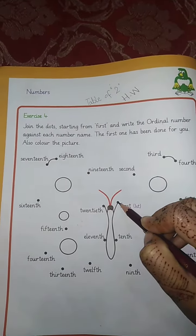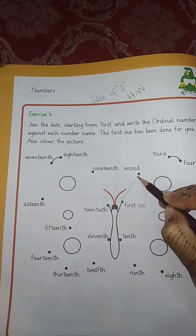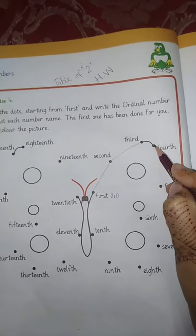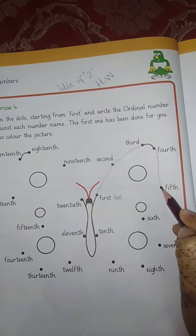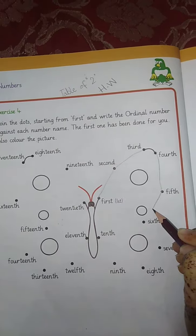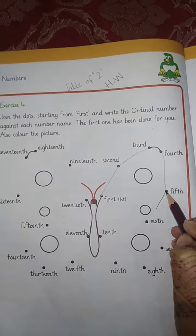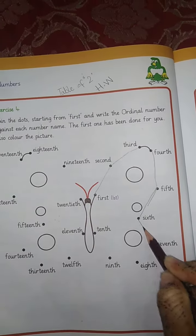First ordinal number, we will match the second, we will match the third, third, fourth, fourth, fifth, fifth, sixth, seventh.